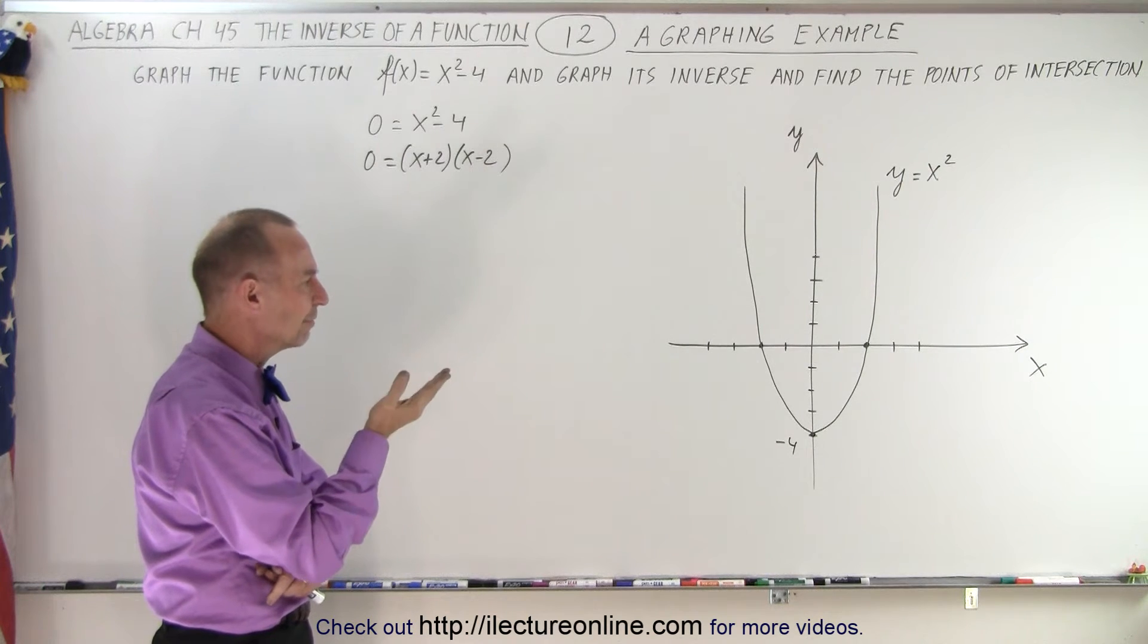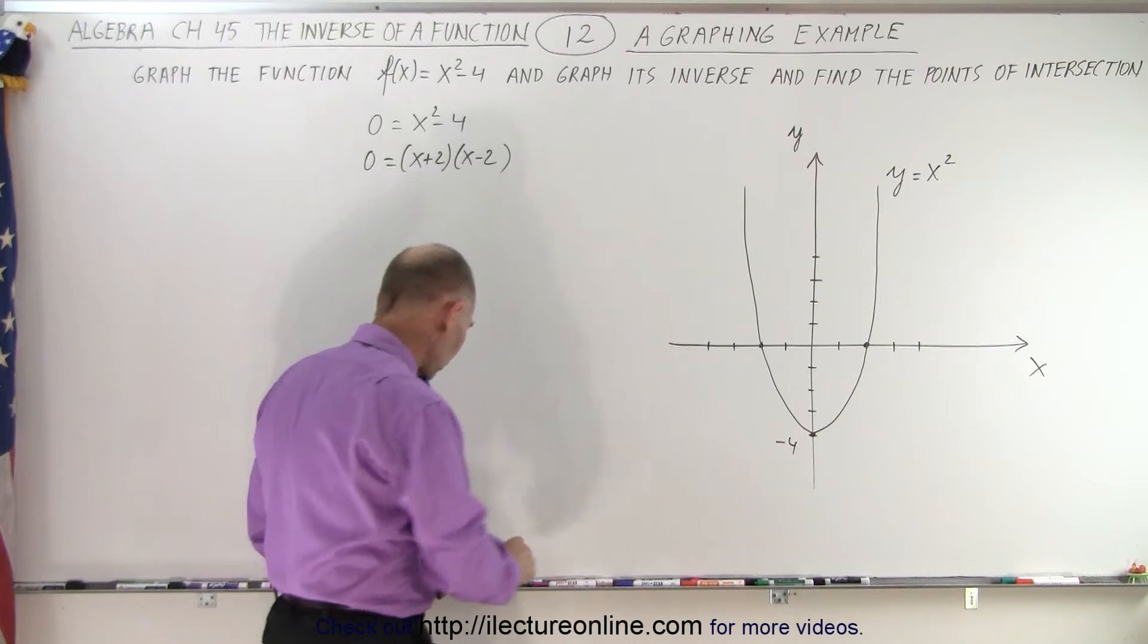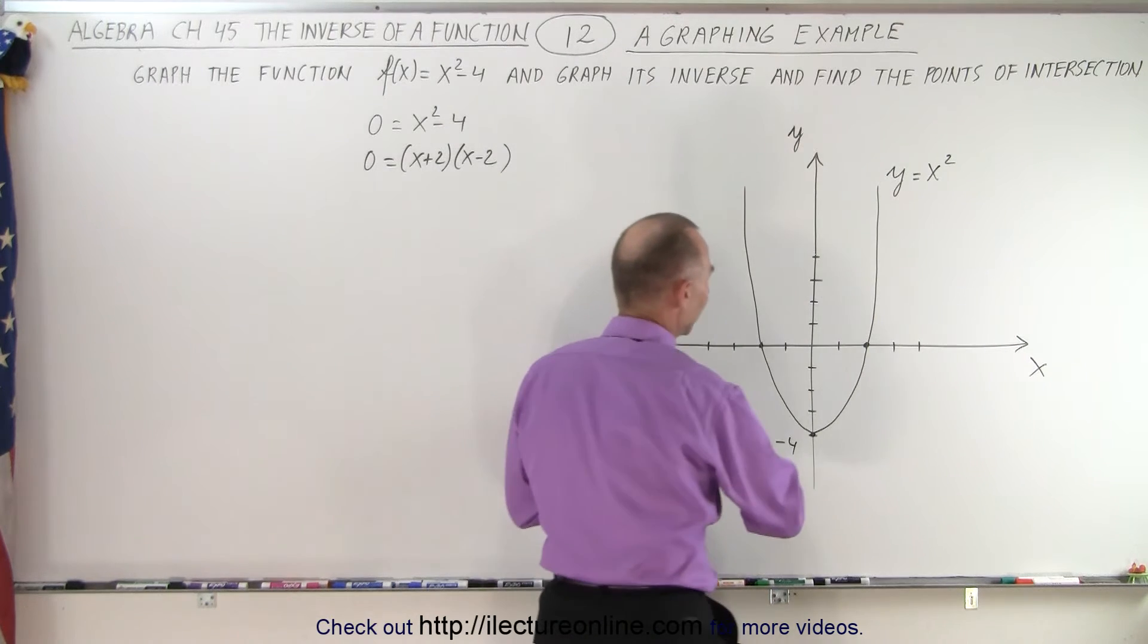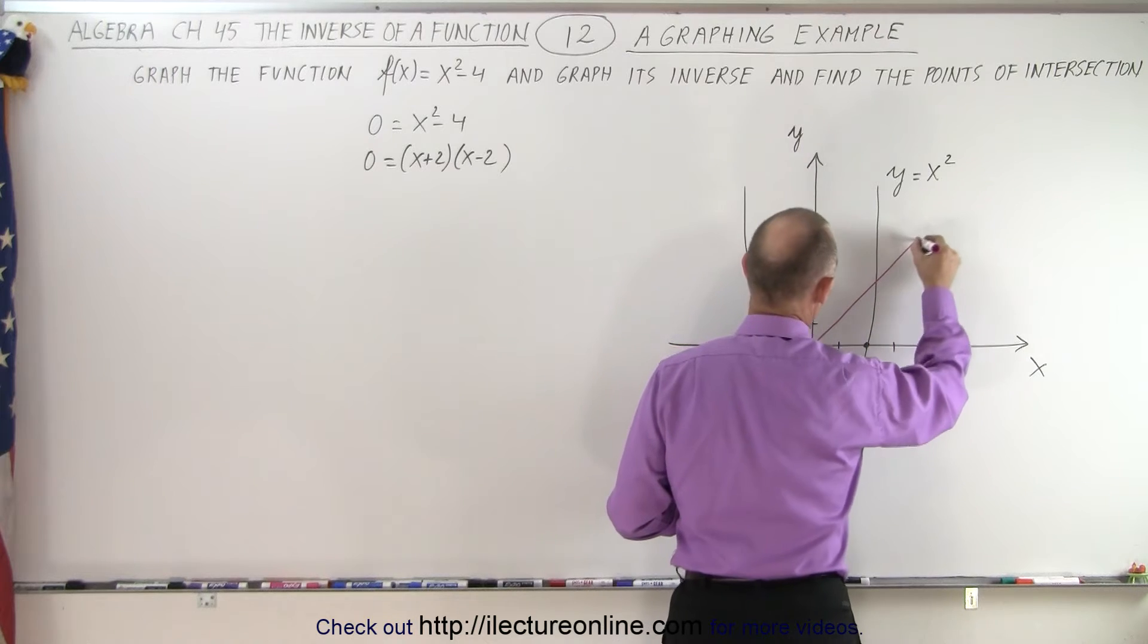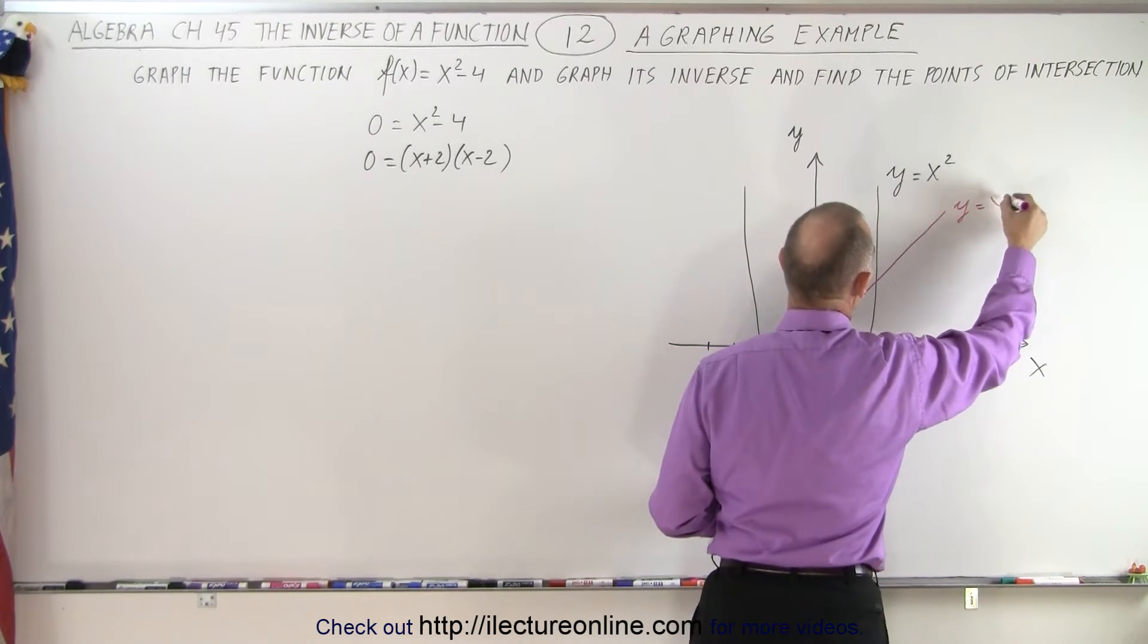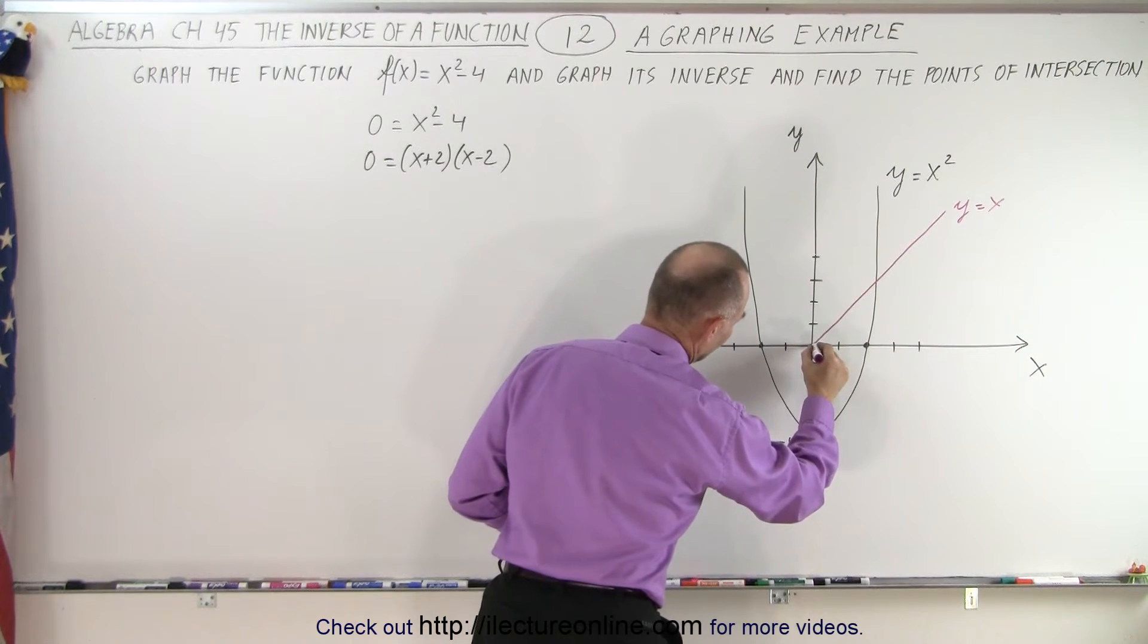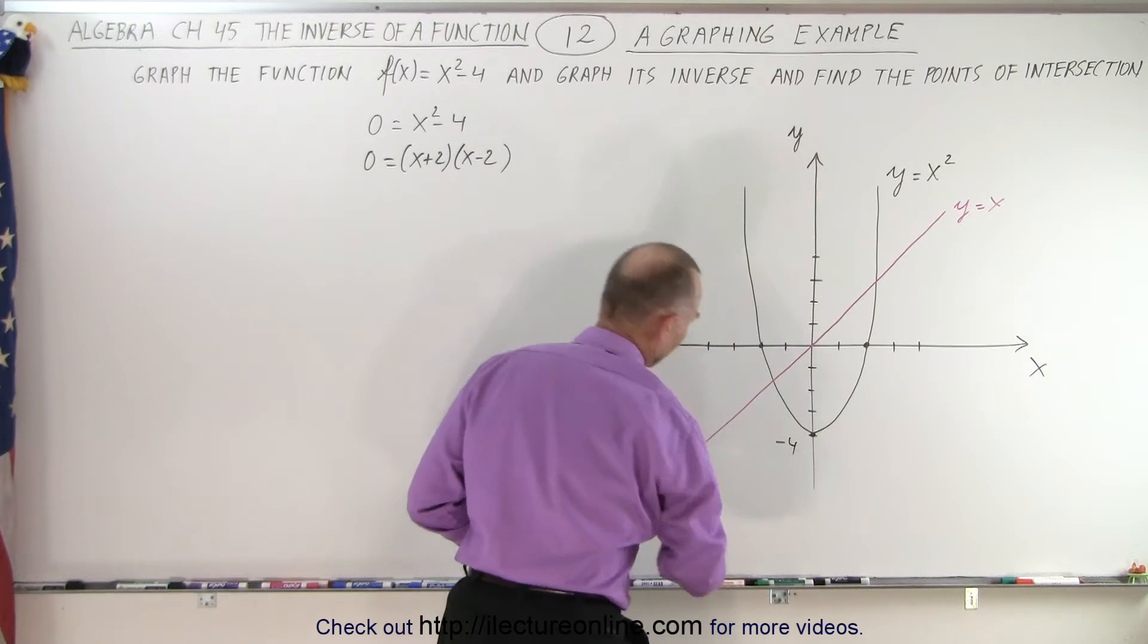Now, how do we graph the inverse? Well, first of all, we can draw the y equals x line. That's the 45-degree line, like this. So this is the y equals x line. We come back on the other side right here, like that.